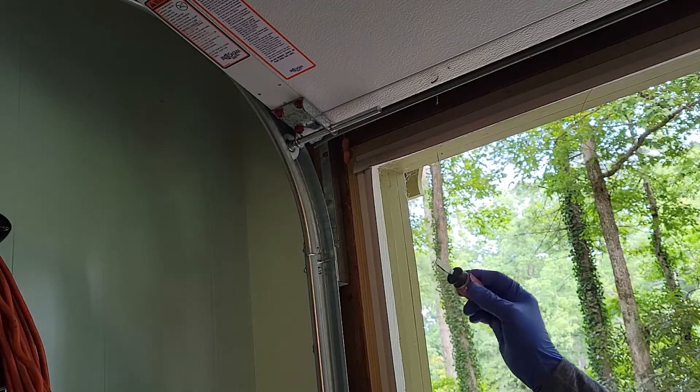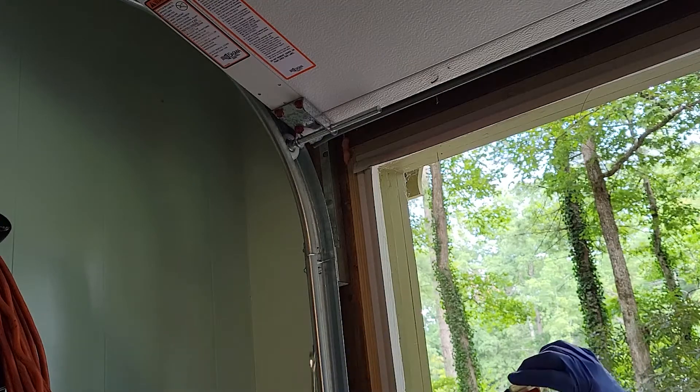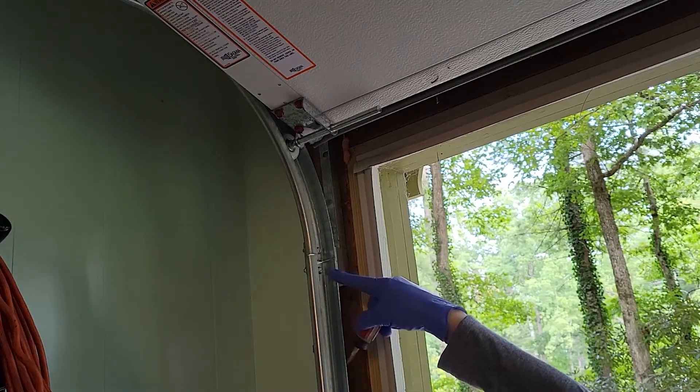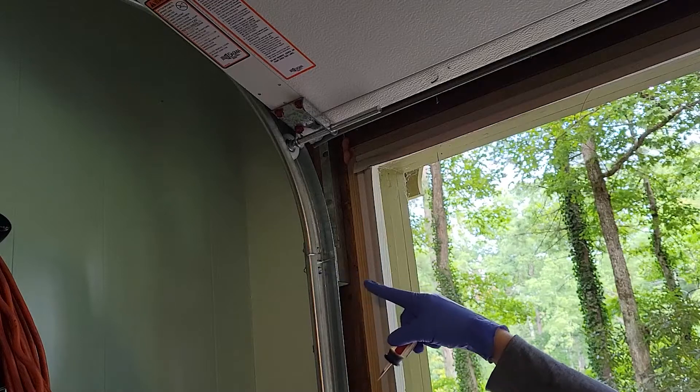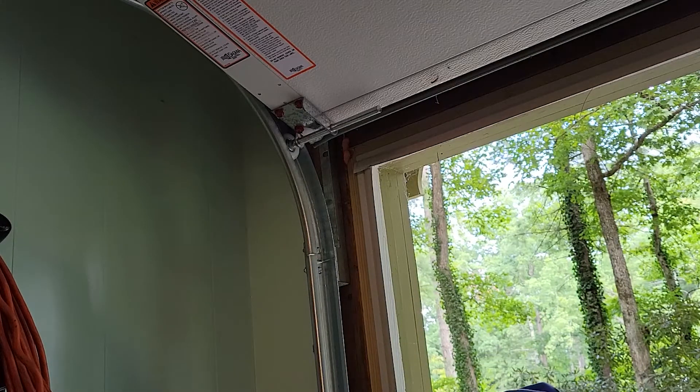Using a short screwdriver and an 11mm for the fastener on the other side, I'm going to loosen the two top screws, and then the middle one, and then I'm going to try to reposition the rail.